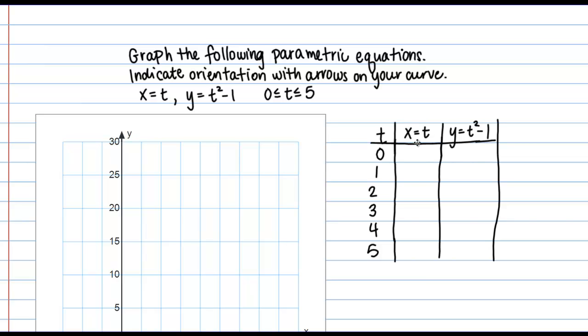So let's look at x first of all. I have the equation x equals t, so that's relatively simple. So for t, 0 through 5, my x values are just going to be 0 through 5.